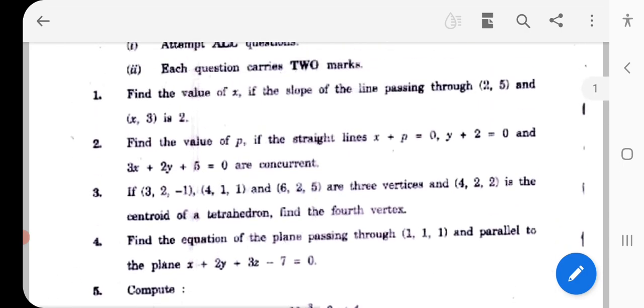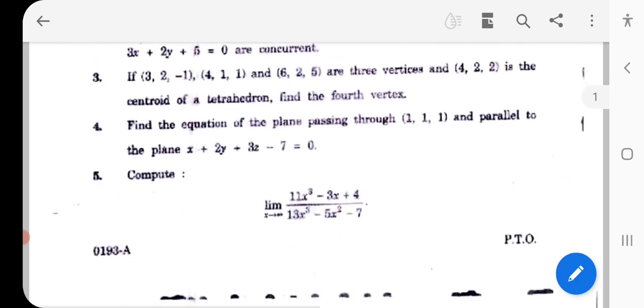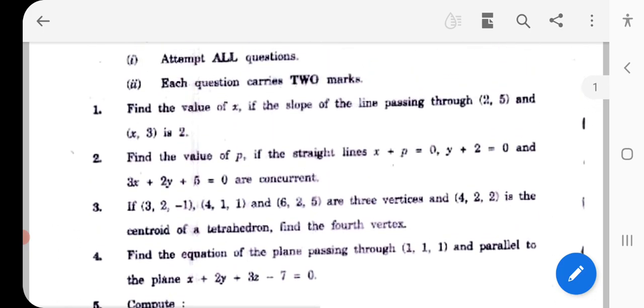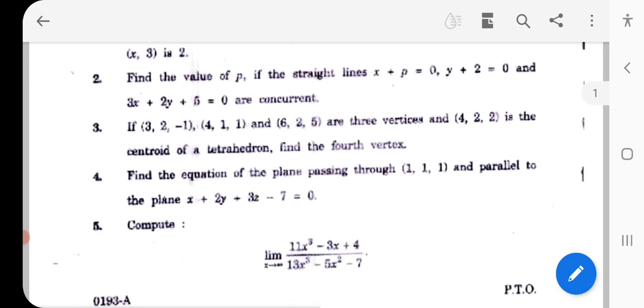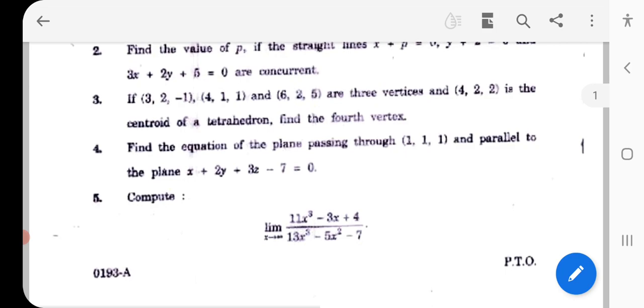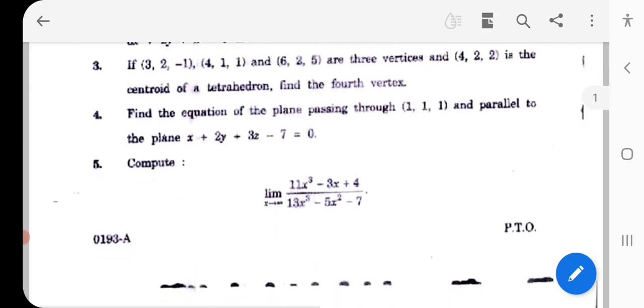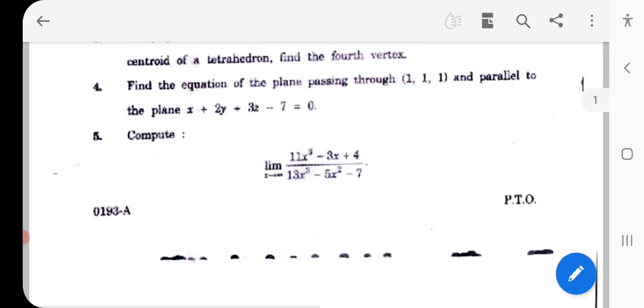In this model, we will focus on slope and other straight lines, concurrent based on the value of p finding, fourth vertex finding, and equation of plane passing through and parallel to the plane. Passing and parallel, two conditions based on equation.